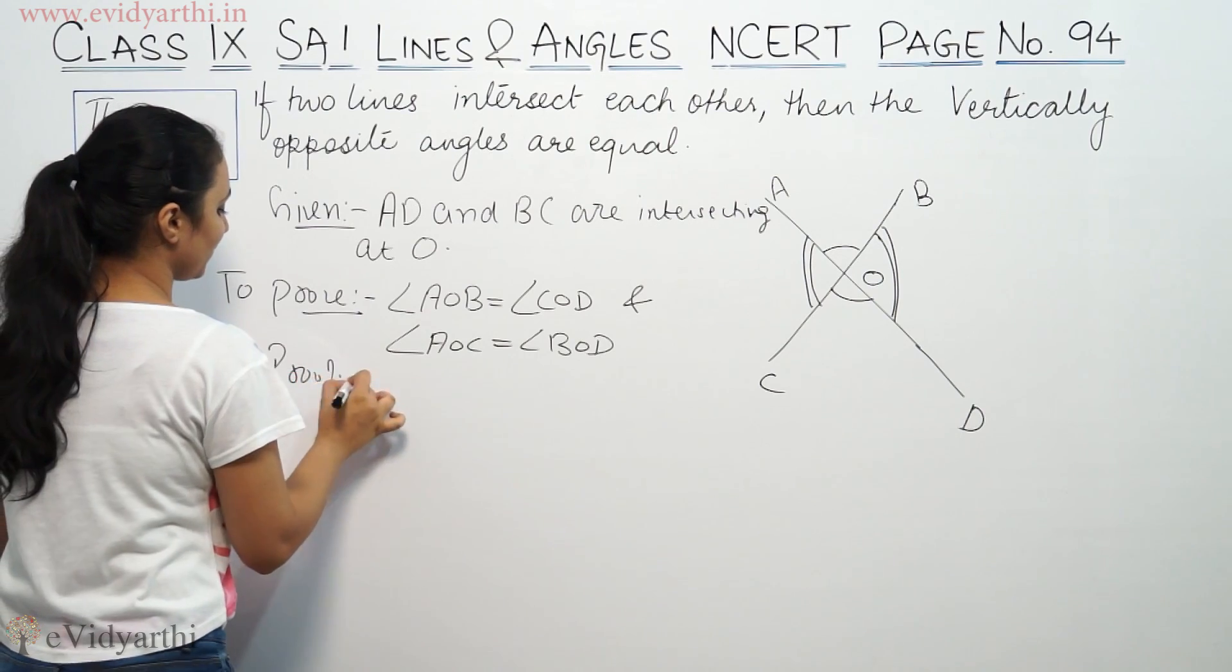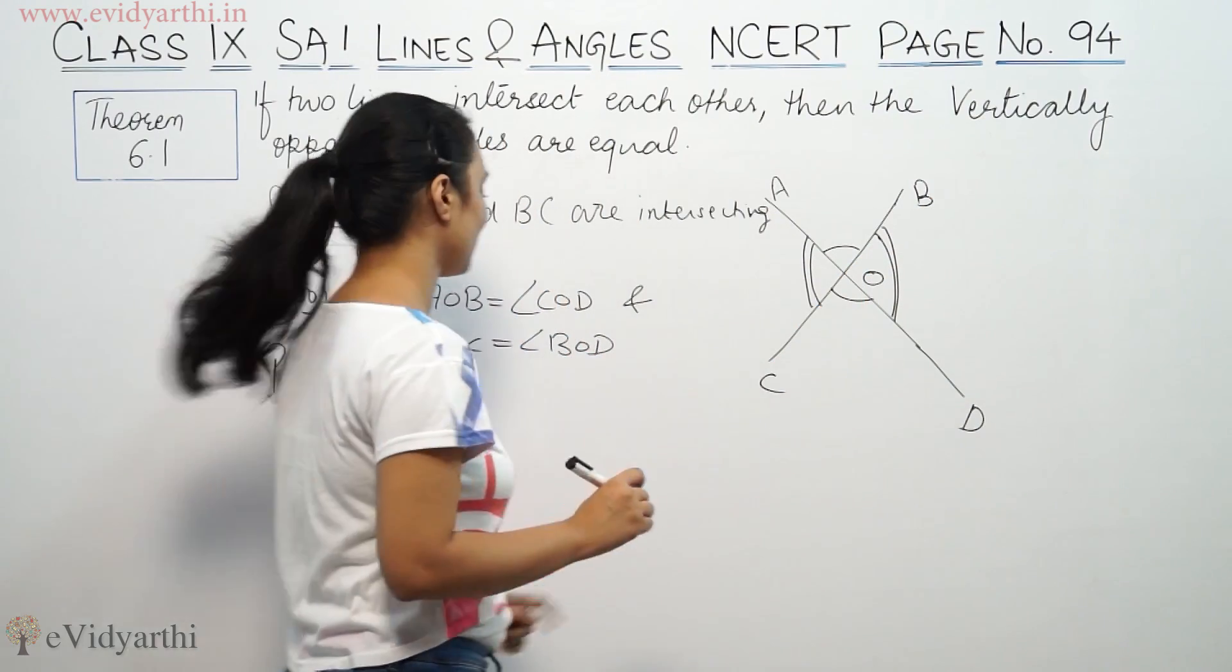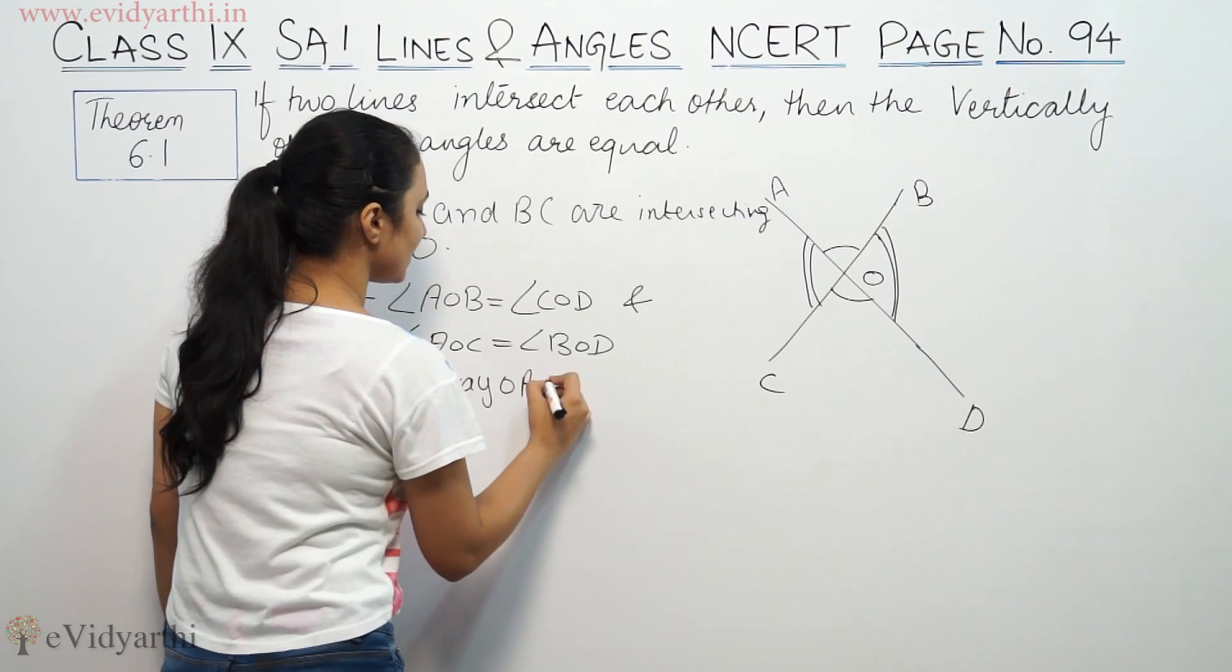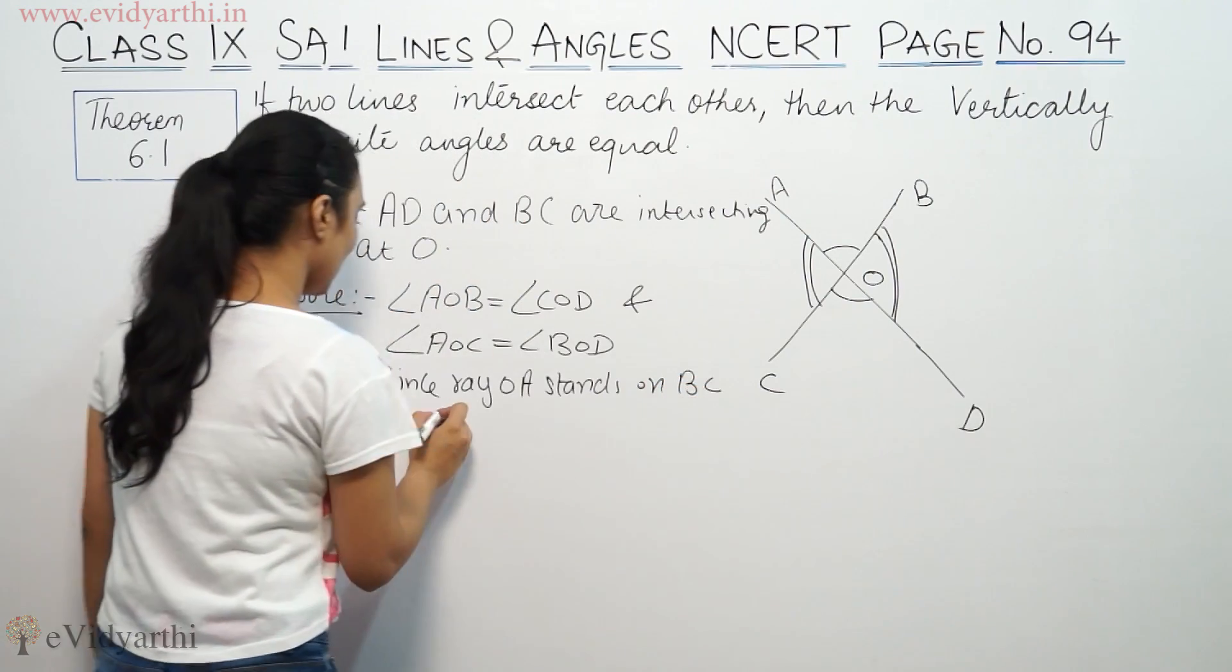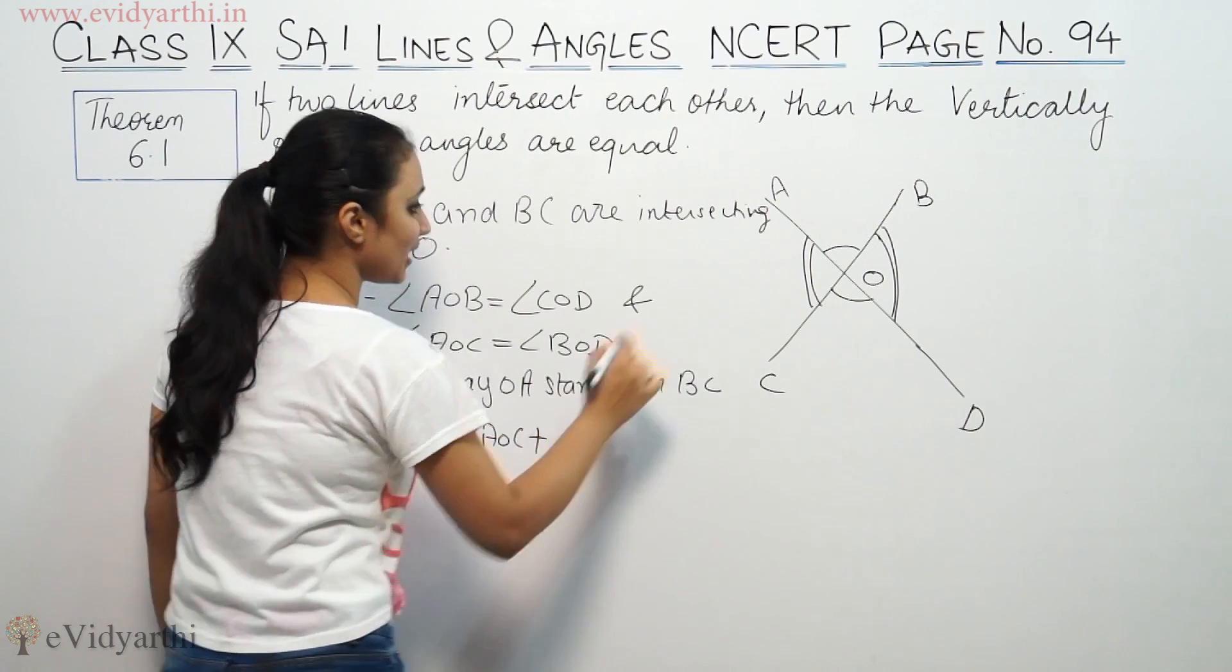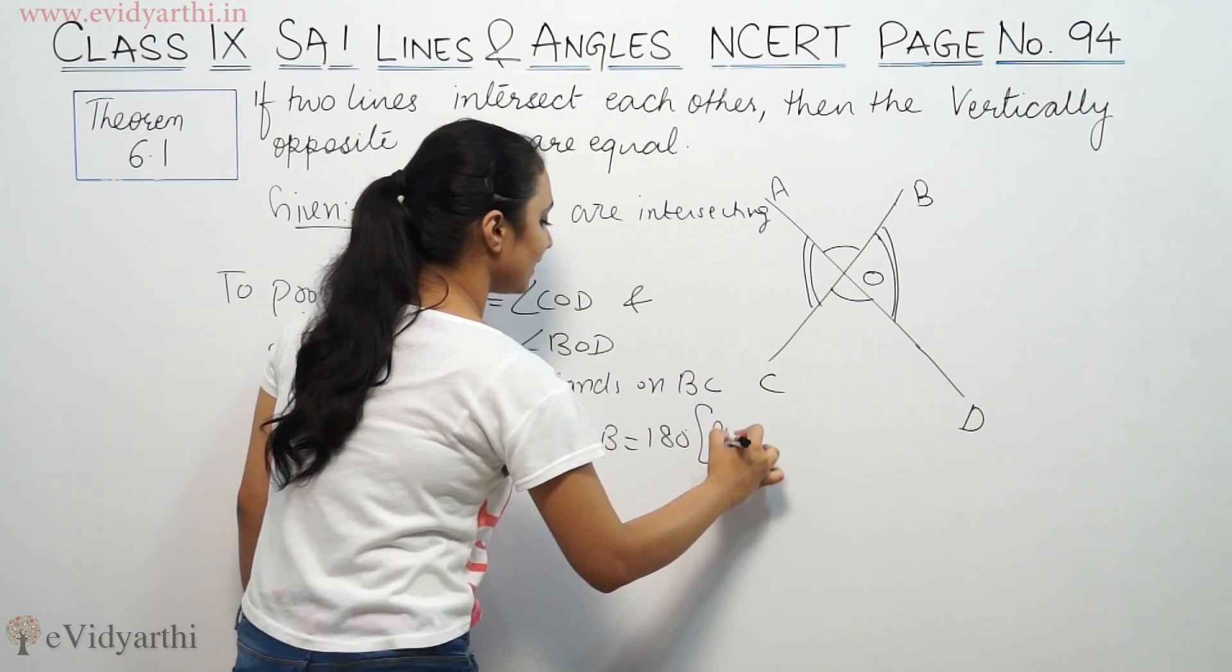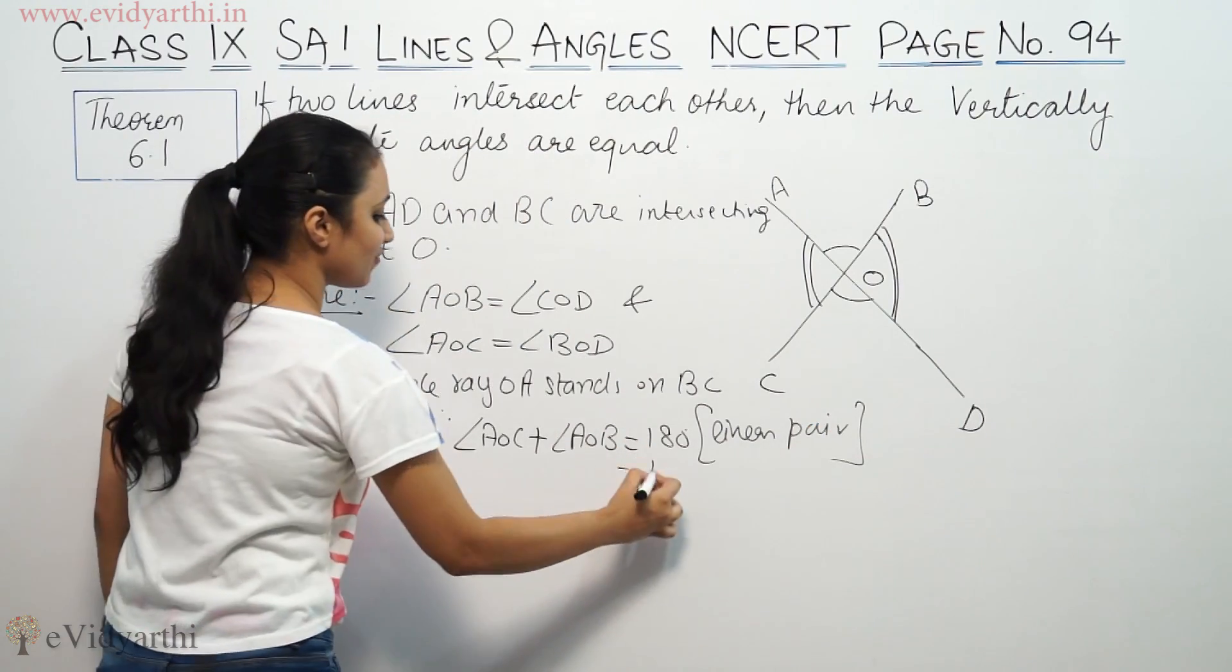Proof. The only thing is that OA, this line stands on BC. Since OA stands on BC, therefore angle AOC plus angle AOB is equal to 180 degrees. This is also linear pair. So here I am going to pass on your first equation.